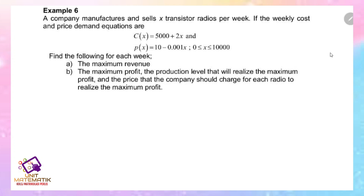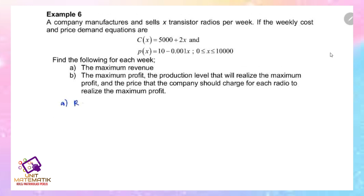Example six: A company manufactures and sells x transistor radios per week. The weekly cost equation is C(x) = 5000 + 2x, and the price-demand equation is P(x) = 10000 - 0.001x, where x is from 0 to 10,000 units. Find the following for each week: (a) the maximum revenue, and (b) the maximum profit, the production level that realizes the maximum profit, and the price the company should charge.